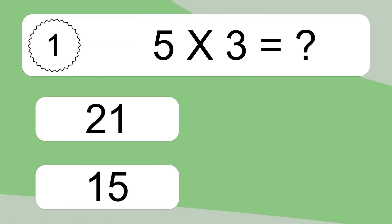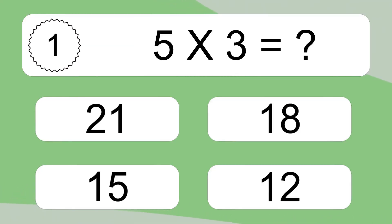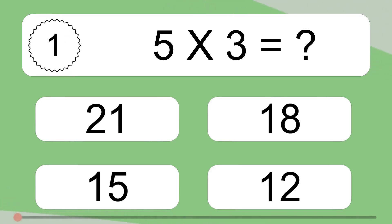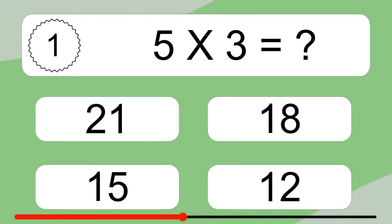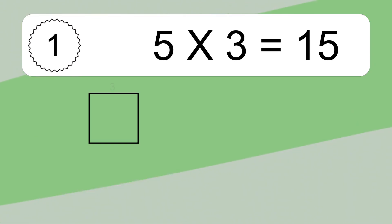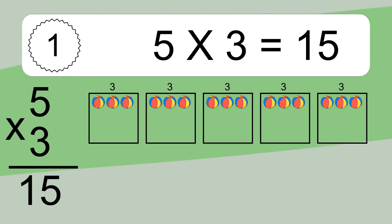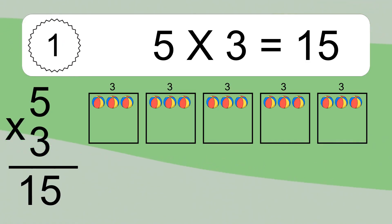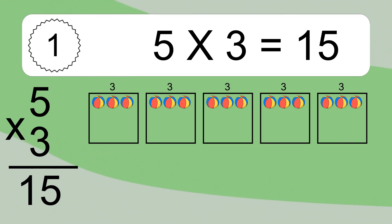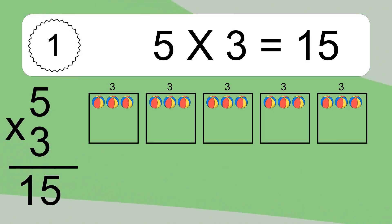5 times 3 equals what? 5 times 3 equals 15. We have 5 boxes, and each box has 3 colorful balls inside. If you count all the balls in all the boxes together, you will have 5 times 3 balls. This equals 15 balls.